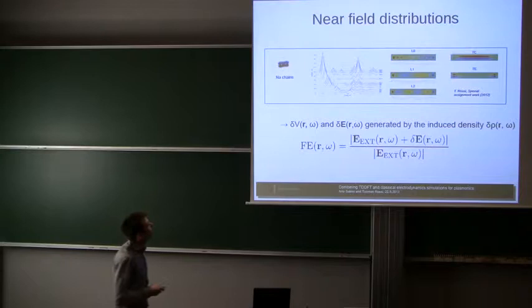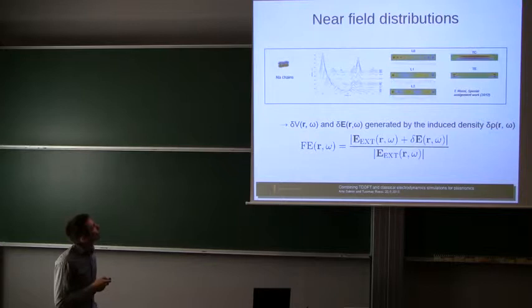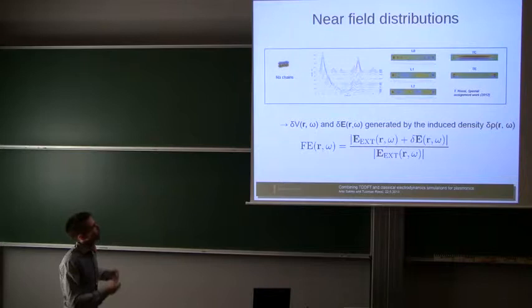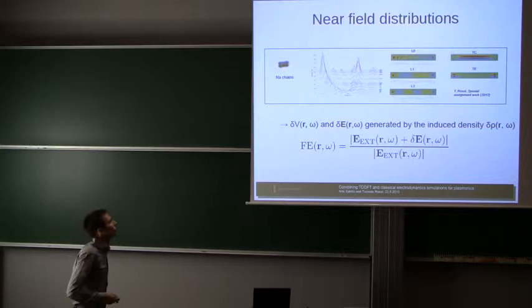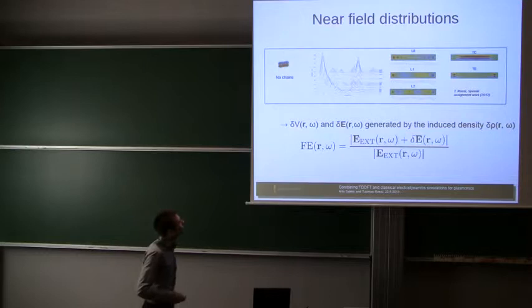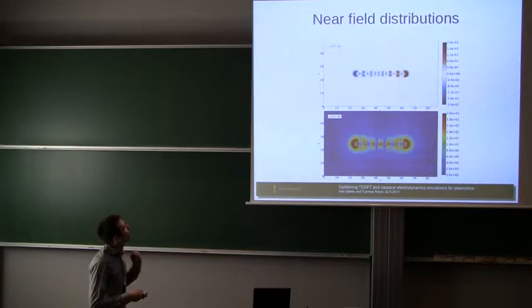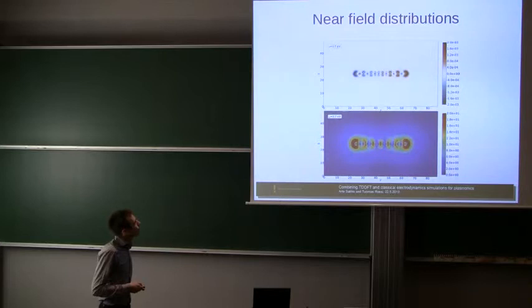You can calculate the charge density fluctuations associated with transitions, which means that you can also calculate the potential that this fluctuating charge generates around the nanowires in this case, or whatever your system is. When you know the potential, you can also calculate the electric field. This is what TDDFT does, and this is what Thomas has been working on. We can now really use GPAW's TDDFT modules to calculate the near-field distributions around the structure.